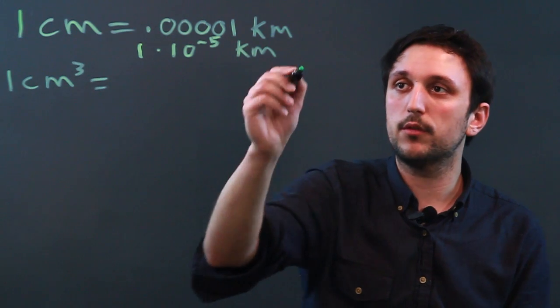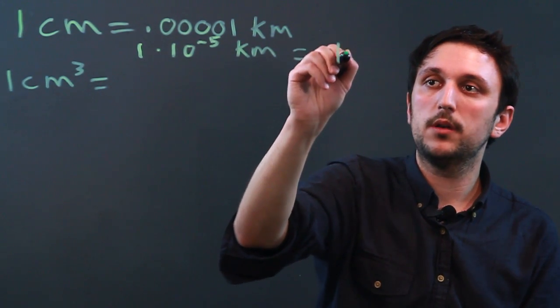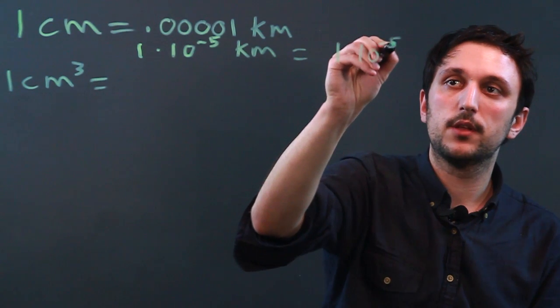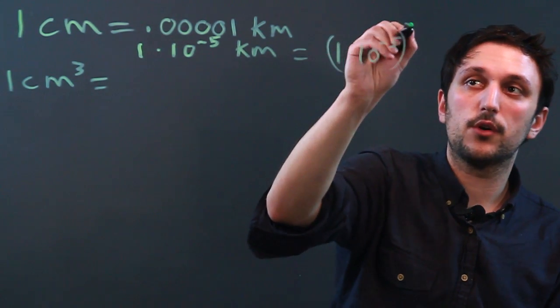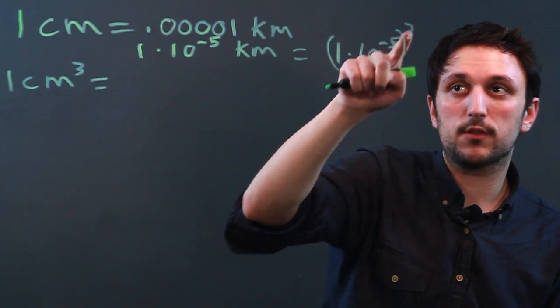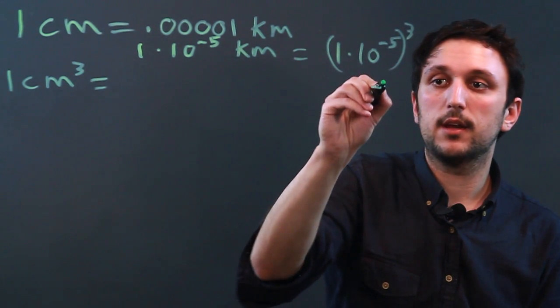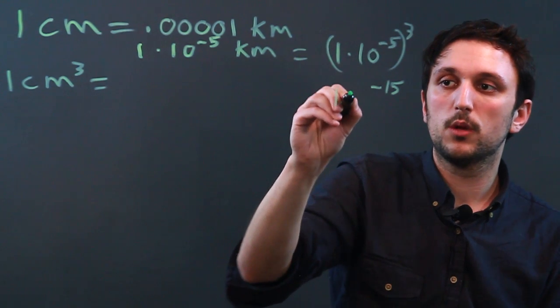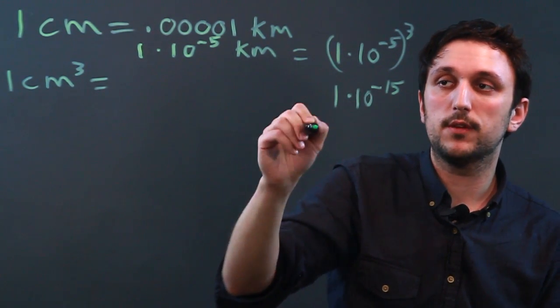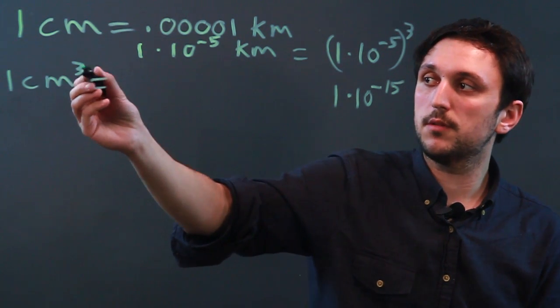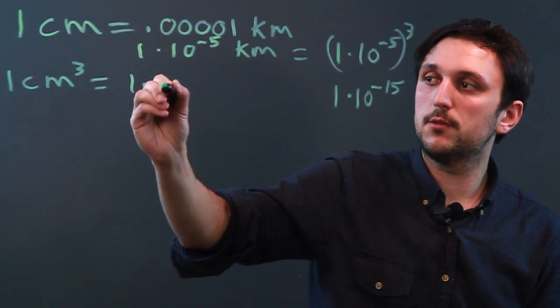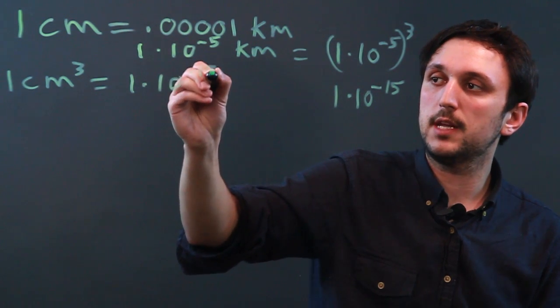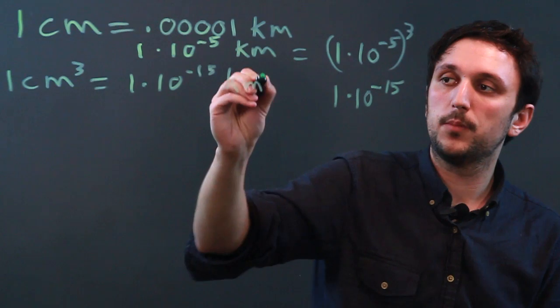So when we cube that, we say, okay, one times ten to the negative fifth to the third, and we distribute the exponents, so we get negative 15, one times ten to the negative 15. So one centimeter cubed equals one times ten to the negative 15 kilometers cubed.